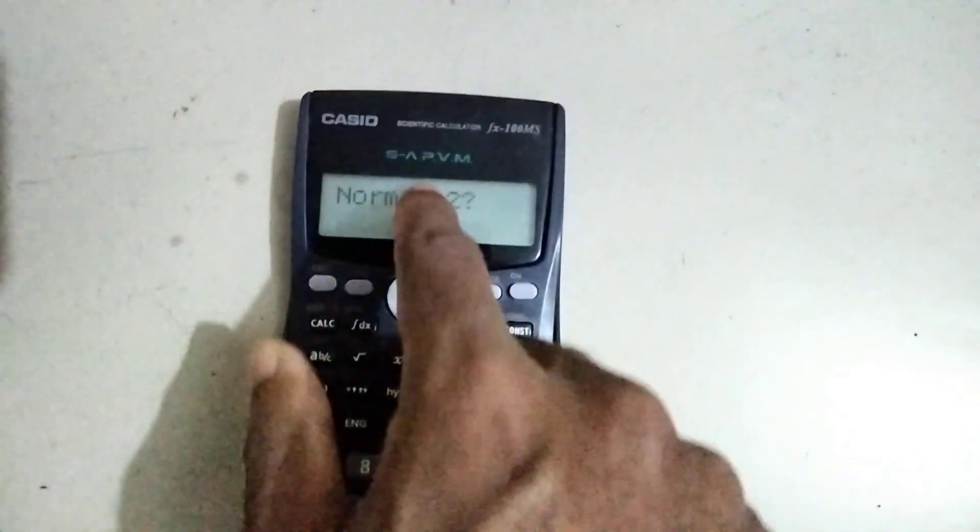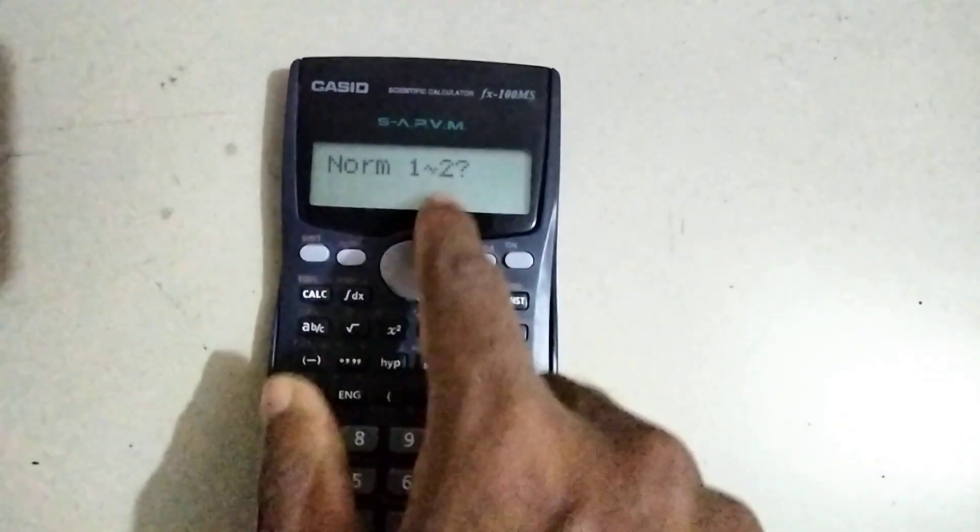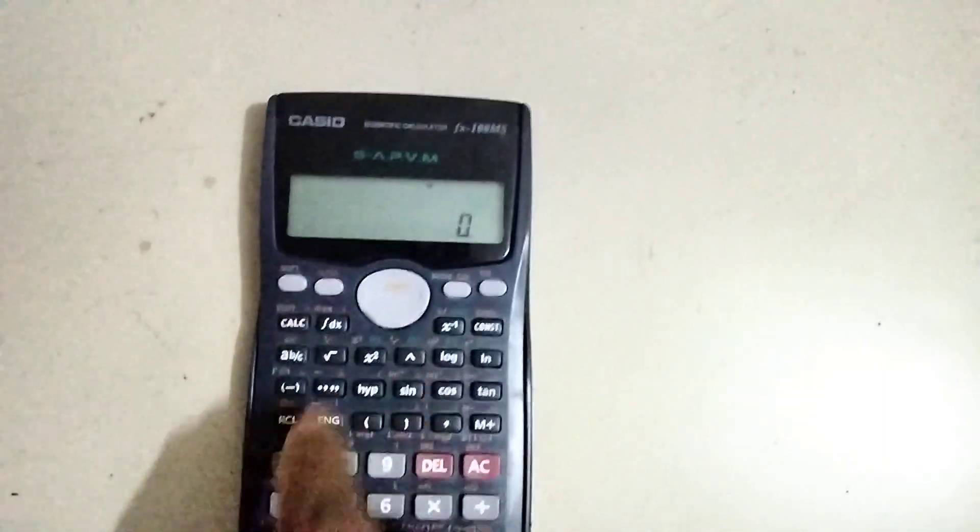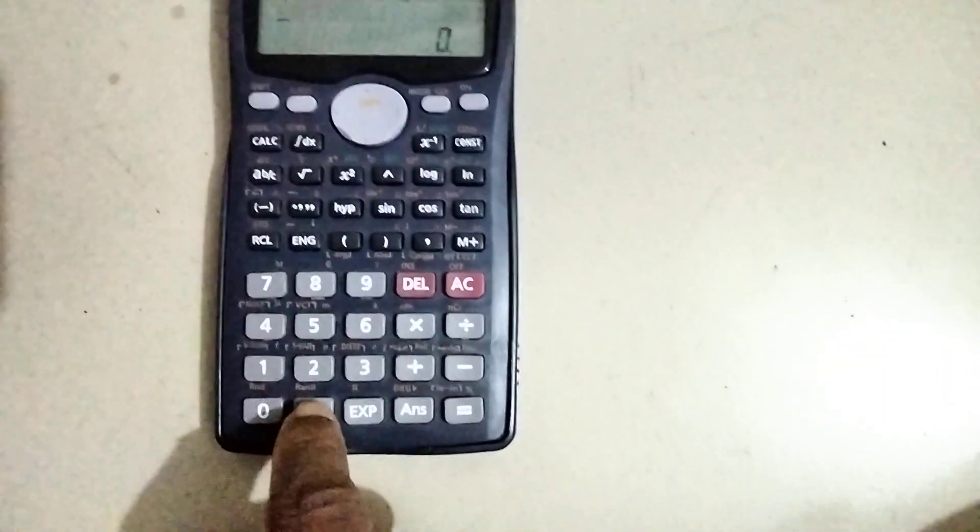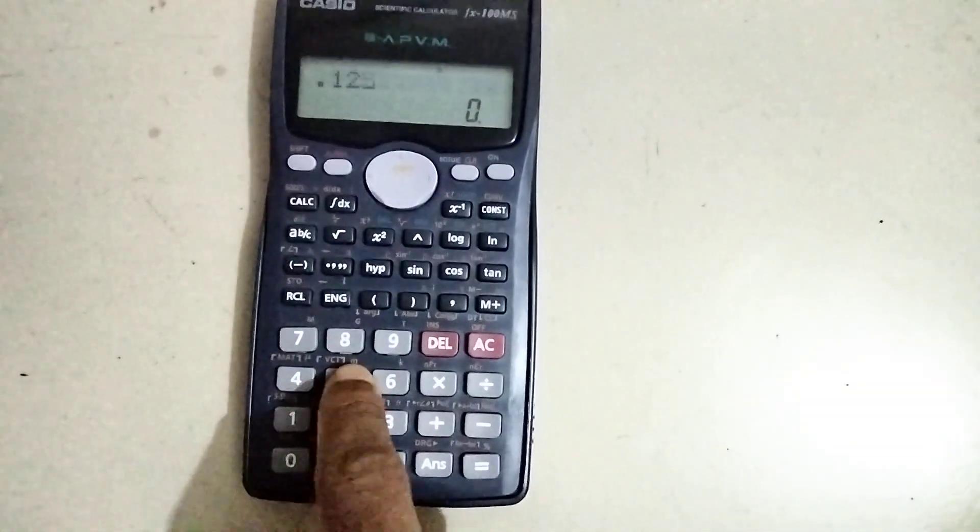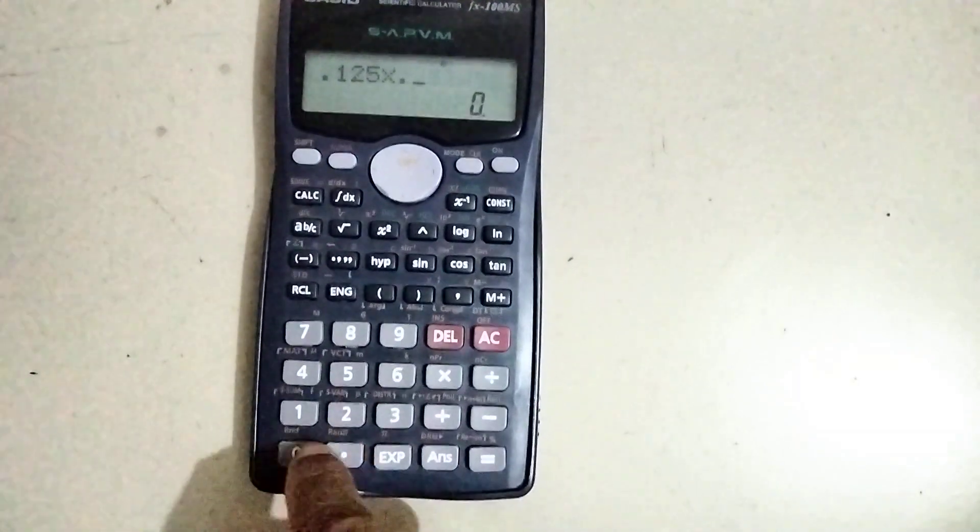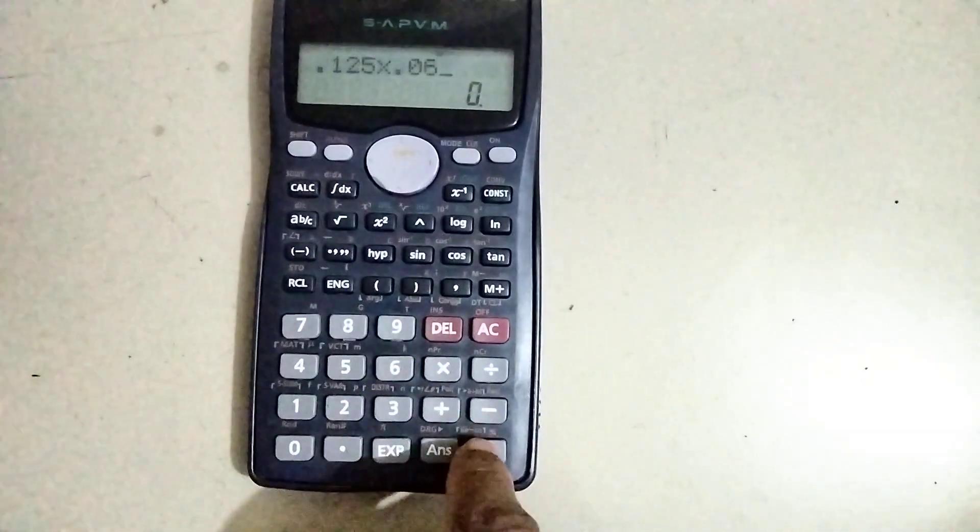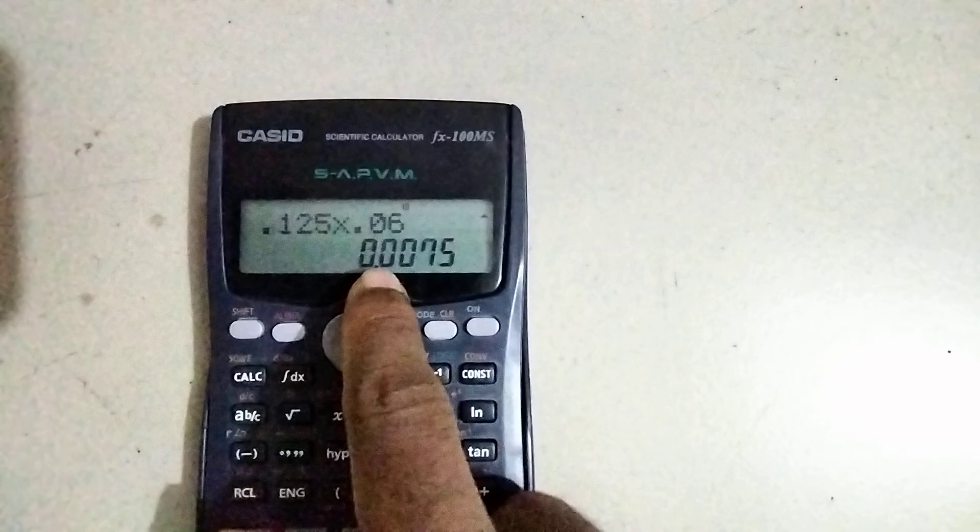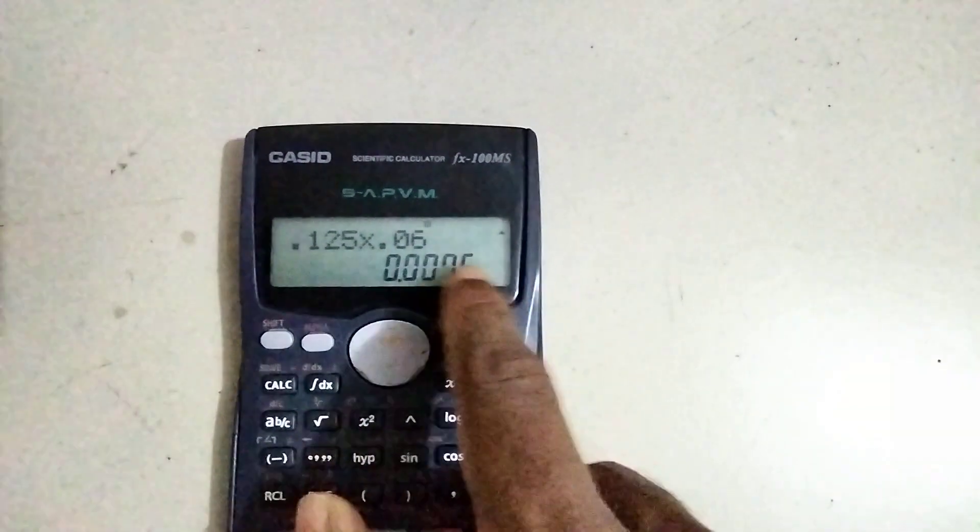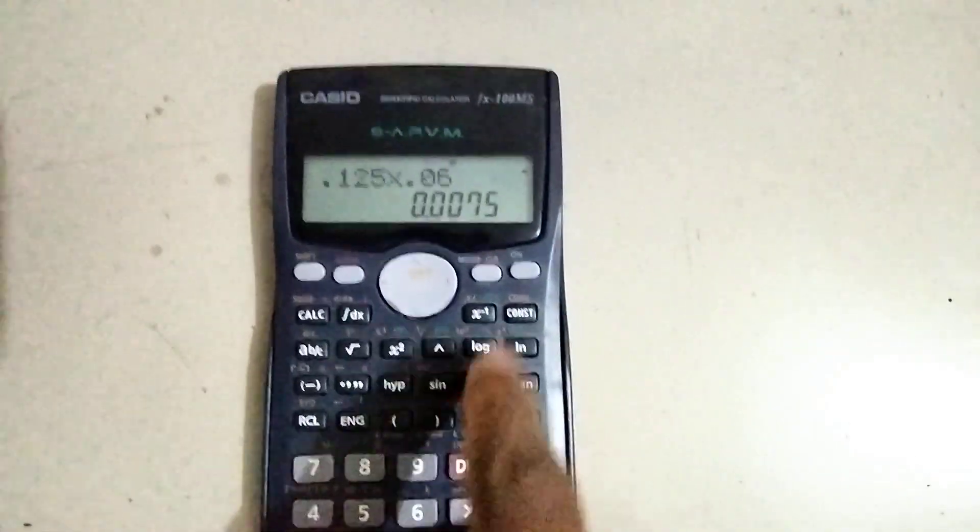Then you're converting from 1 to 2, so press 2. Now you can enter the same calculation again: 0.125 times 0.06. You'll get the number without any negative exponent. That's how you can solve the problem.